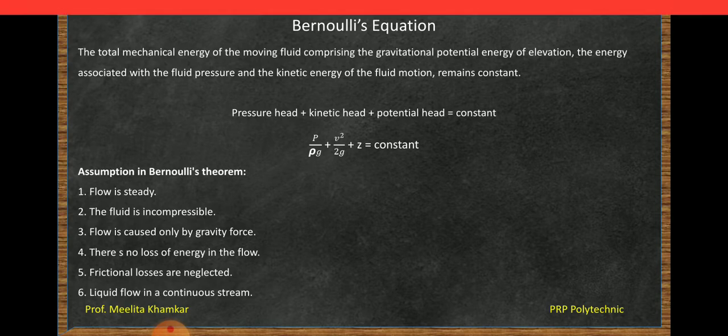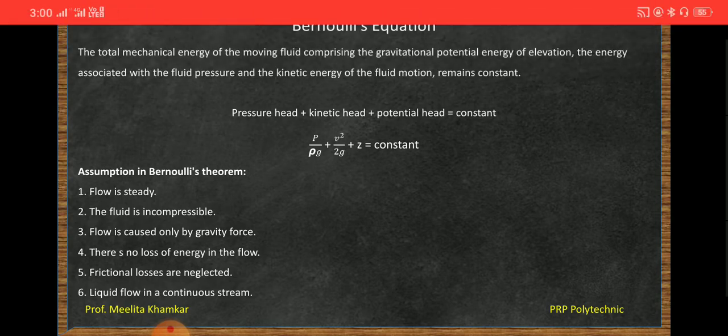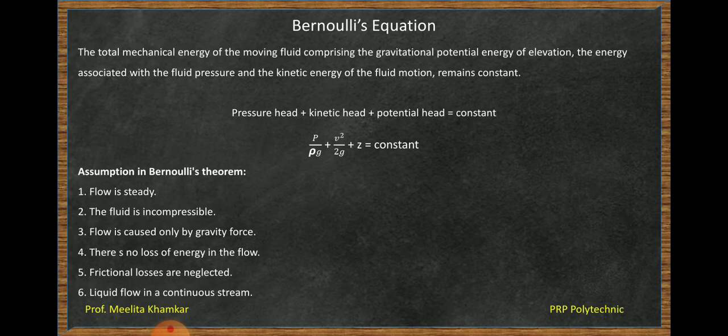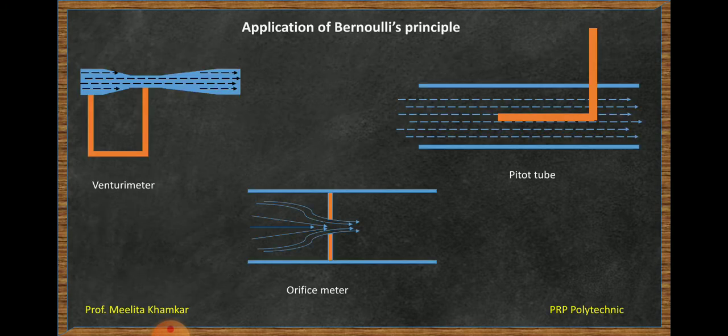Bernoulli's equation can be used for measurement of flow. Bernoulli's principle can be applied to devices which are used for flow measurement. The first application is venturimeter, another is orifice meter, and third is pitot tube. Let's discuss each in detail.